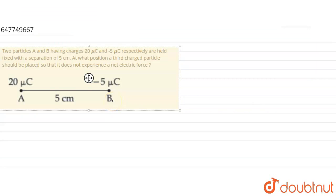The question is: two particles A and B having charges 20 microcoulombs and minus 5 microcoulombs respectively are held fixed with a separation of 5 cm. At what position should a third charged particle be placed so that it does not experience a net electric force?